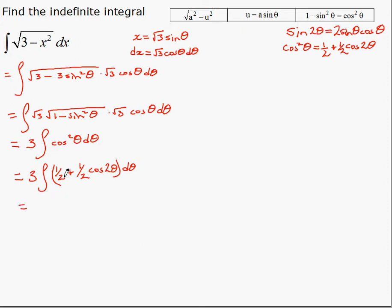And now we can integrate each part on its own. We end up with 3 over 2 times theta is the integral of the first part. We end up with 3 over 2 times theta, plus 3 over 2 times the integral of cosine of 2 theta is sine of 2 theta over 2. And that's plus a constant.